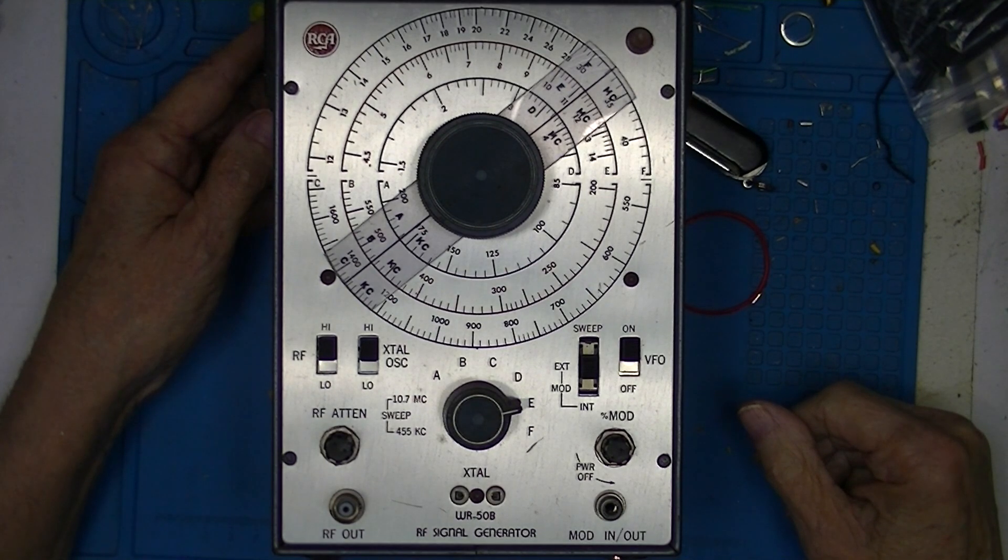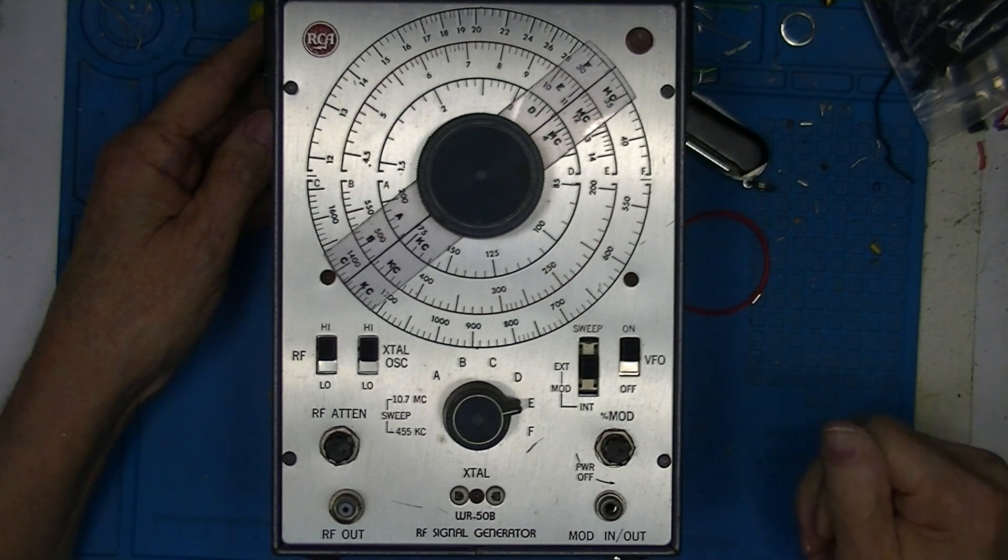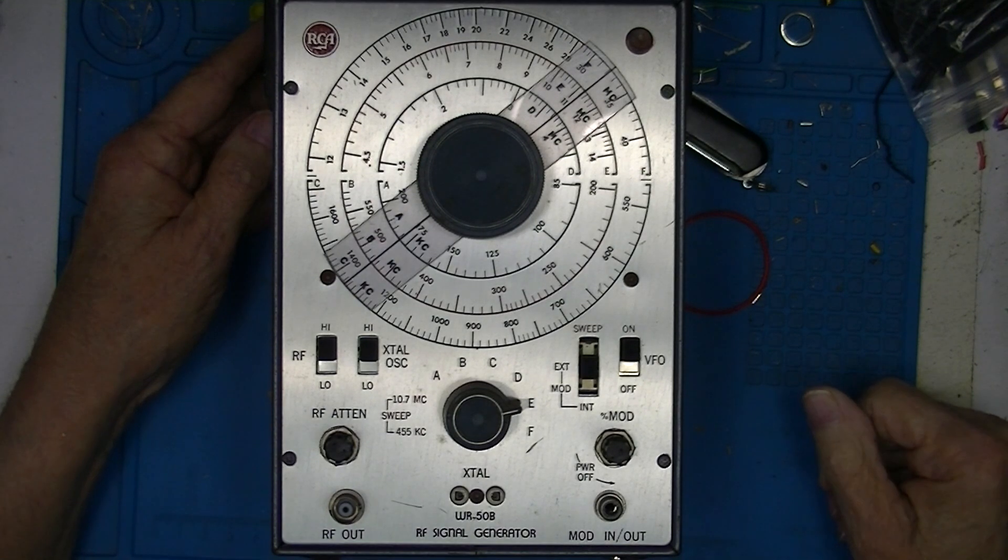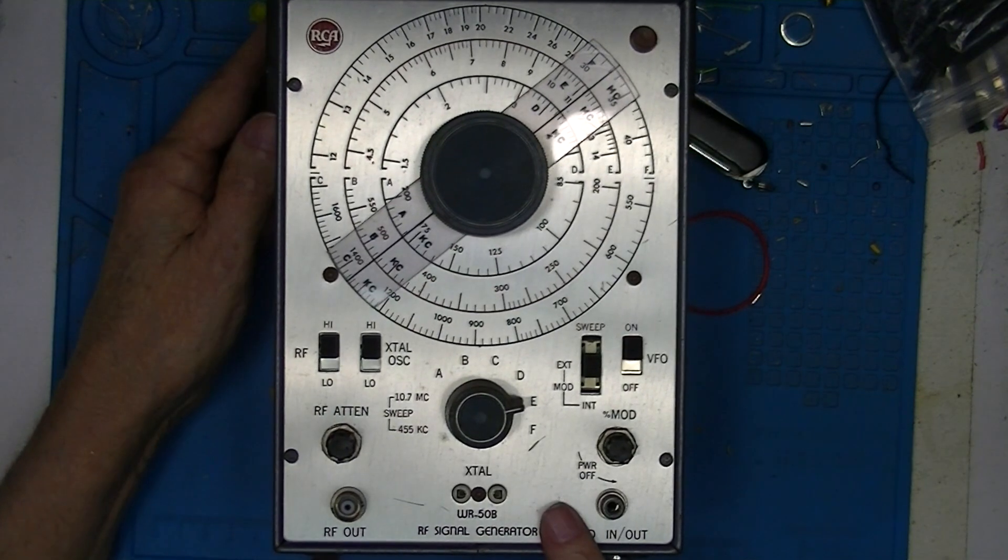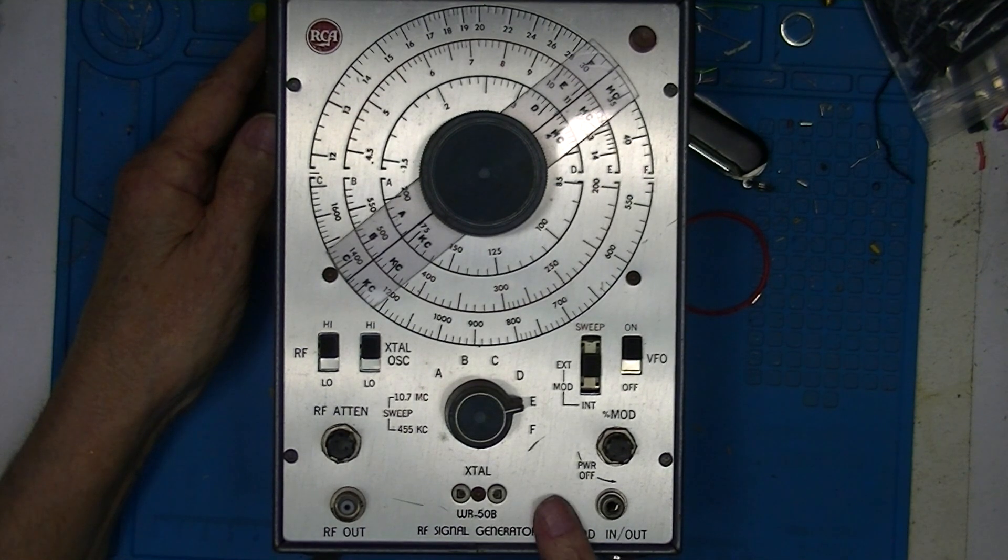The last three videos I did were on a Tektronix 191 RF signal generator, a very high-end instrument introduced by Tektronix in 1966. This represents the upper end of the signal generator spectrum.